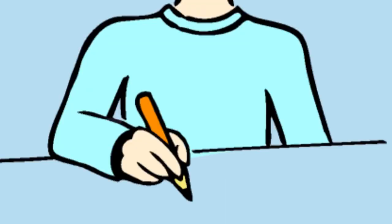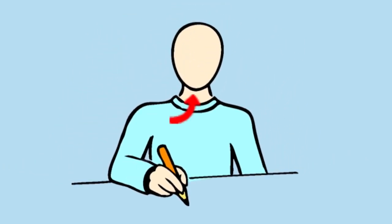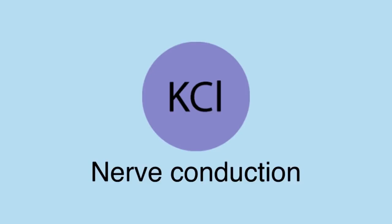Grab your pencil. You can feel the pencil in your hand because a chemical message is relayed from the muscles in your hands to your brain. Potassium chloride plays an important role in nerve conduction. Without it, no chemical messages would be relayed.